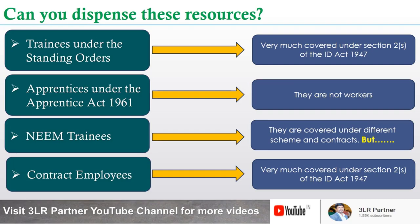Regarding trainees under standing orders: they are covered under section 2S of the ID Act 1947, but whether you can retrench them depends on the situation. These trainees are recruited for a limited training period. If you have made a promise that they will fill a permanent position, you have a problem. However, if the training scheme does not obligate the employer to offer employment after completion, you can dispense their services. Please be careful with the terms and conditions in your training offer letters.